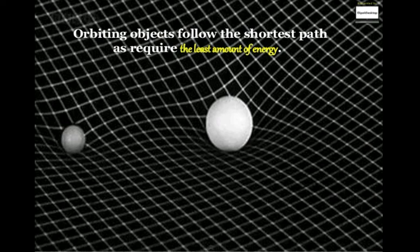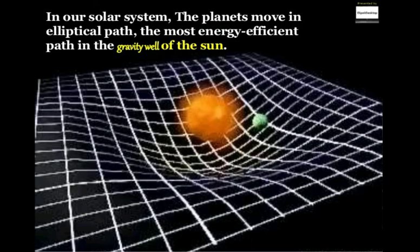Orbiting objects follow the shortest path that requires the least amount of energy. In our solar system, the planets move in elliptical paths, the most energy efficient path in the gravity well of the sun.